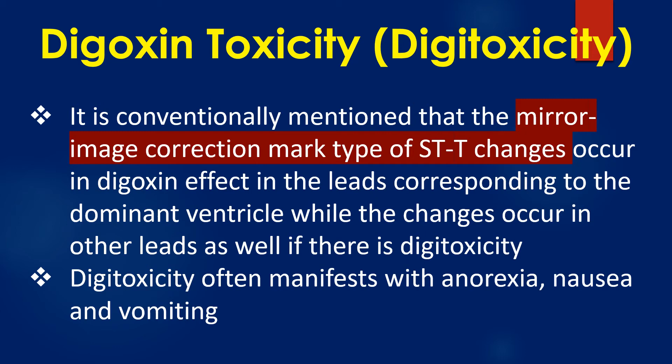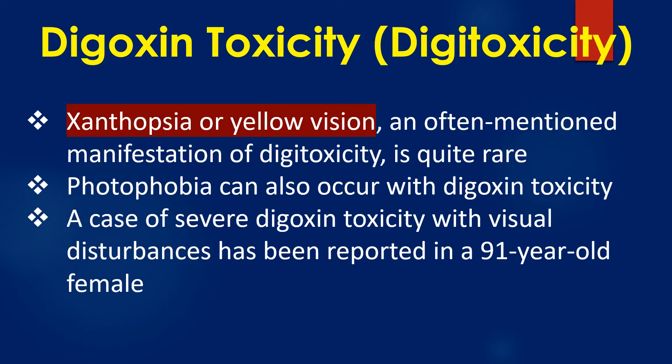Digoxin toxicity often manifests with anorexia, nausea, and vomiting. Xanthopsia or yellow vision, an often mentioned manifestation of digoxin toxicity, is quite rare.